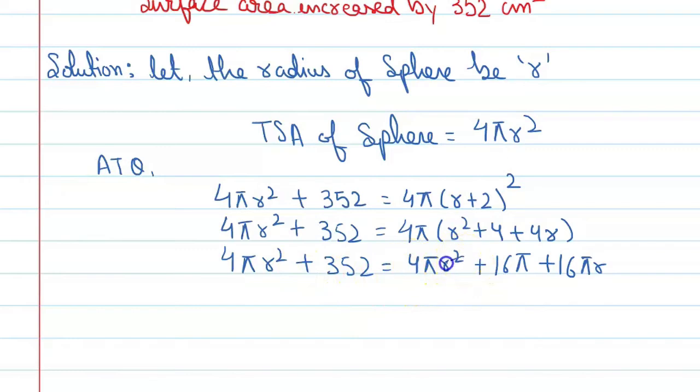This 4πr² and this 4πr² will get cancelled. You will get 352 equal to... take 16π common. It is 16π(1 + r).